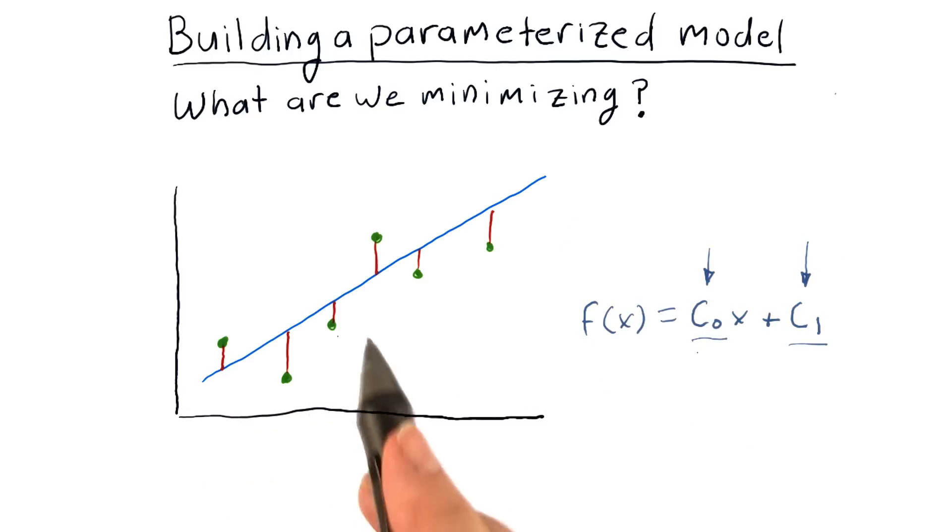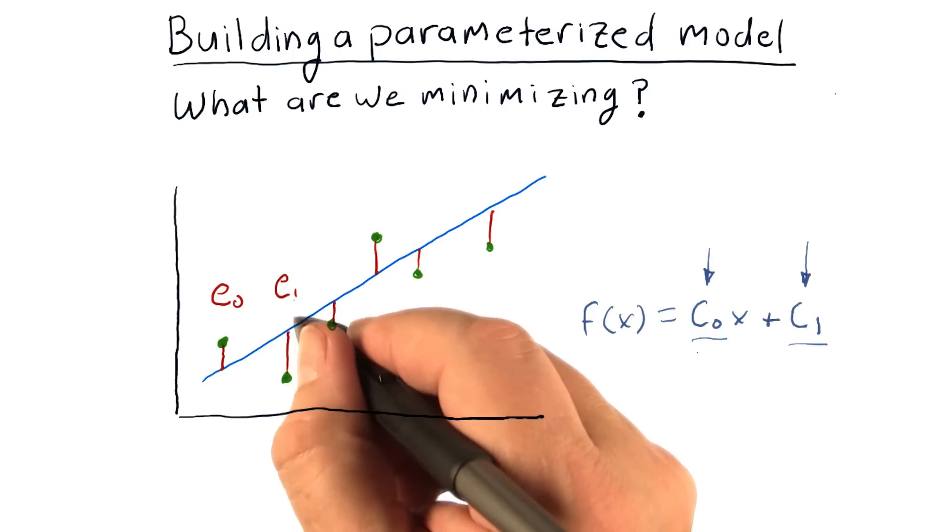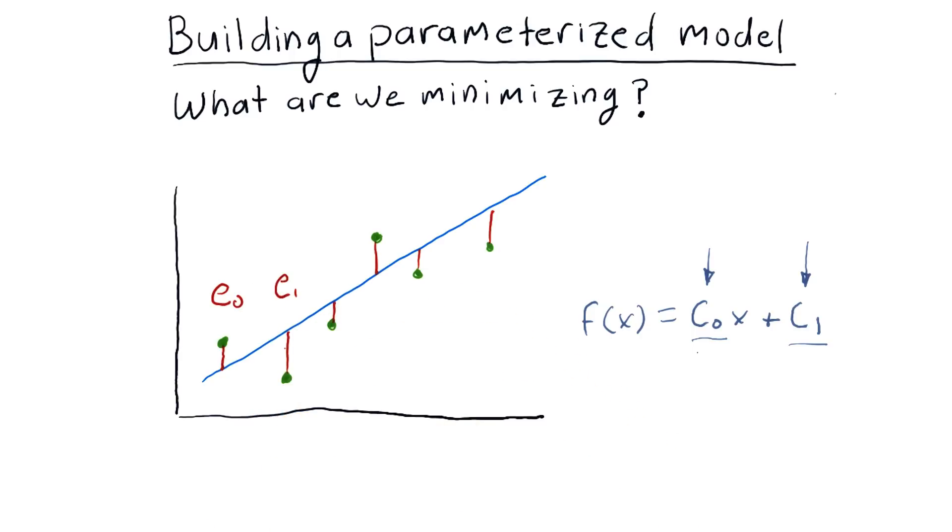Let's call each of these distances e. So e sub 0 is that one, e sub 1 is that one. Can we come up with an equation in terms of e or error that gets us to this solution?